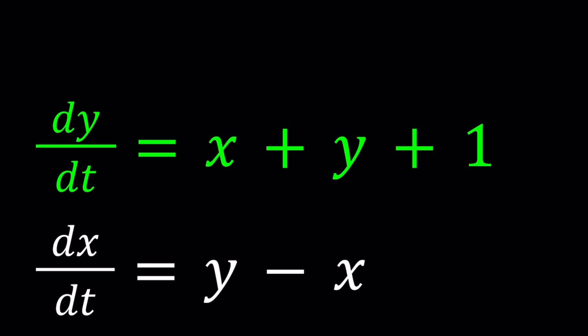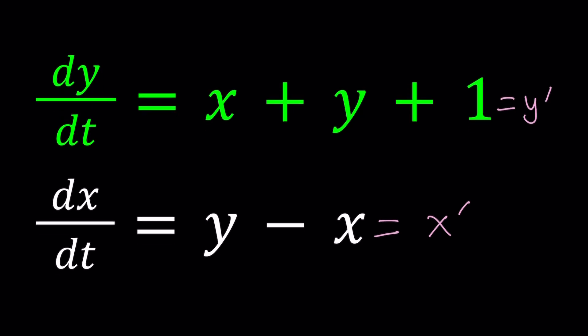I'm going to go ahead and call dy over dt y prime, and I will call the second one x prime. Notice that x prime does not equal 1 because we're not differentiating with respect to x. So let's go ahead and see how we can solve these kinds of problems.